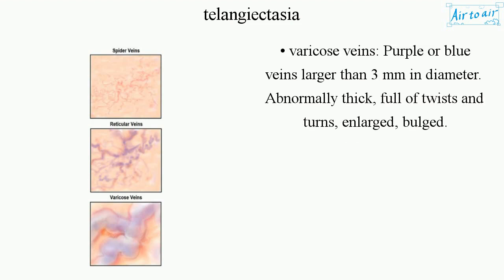Varicose veins: purple or blue veins, larger than 3 mm in diameter, abnormally thick, full of twists and turns, enlarged and bulged.